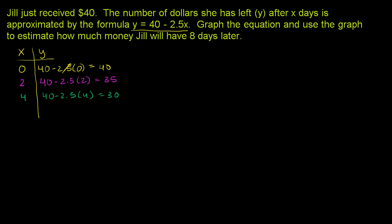After six days, it's going to be 40 - 2.5 times 6. 2.5 times 6 is 15. 40 - 15 equals 25. Then finally, after eight days, it is 40 - 2.5 times 8. 2.5 times 8 is 20, so 40 - 20 is $20. So we actually answered the question. Our estimate for how much money Jill will have eight days later is $20.